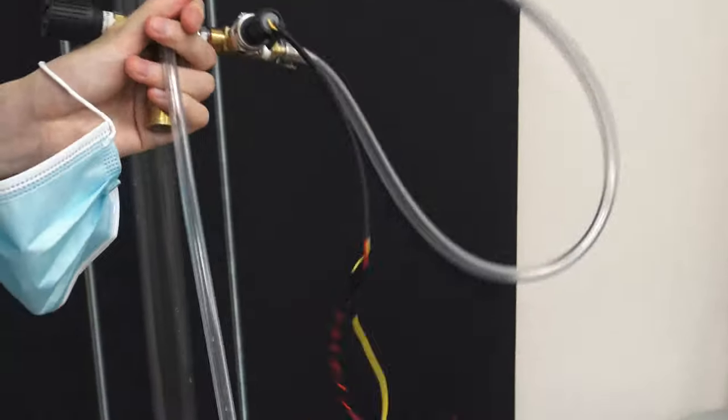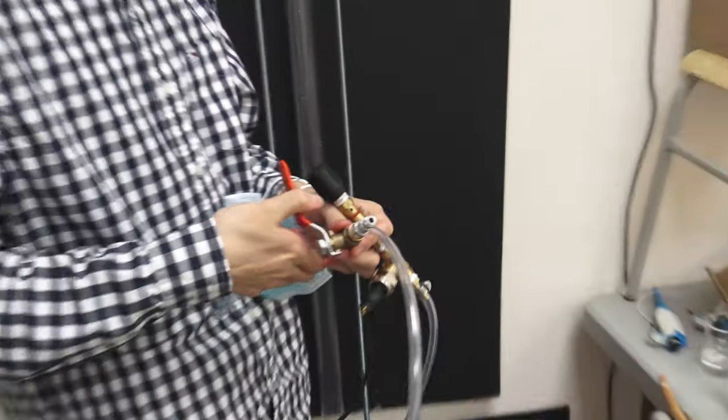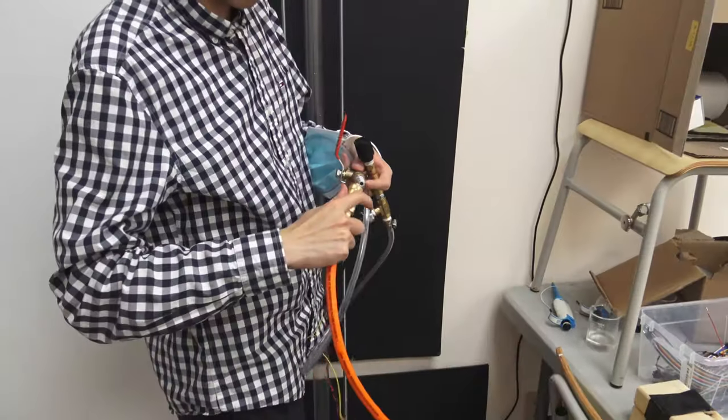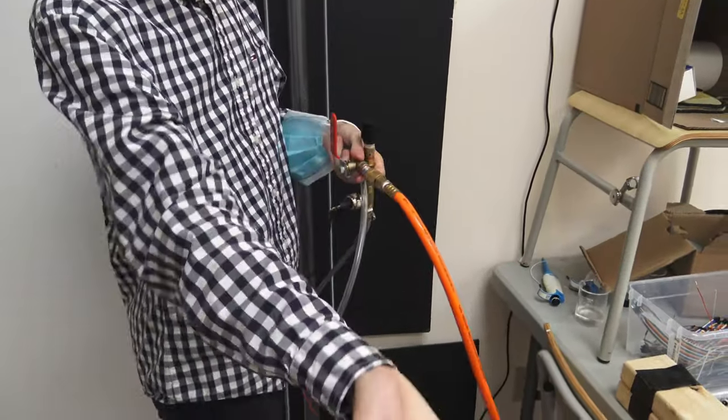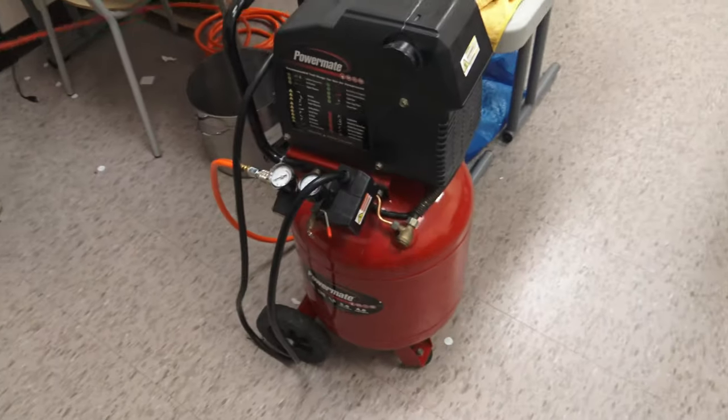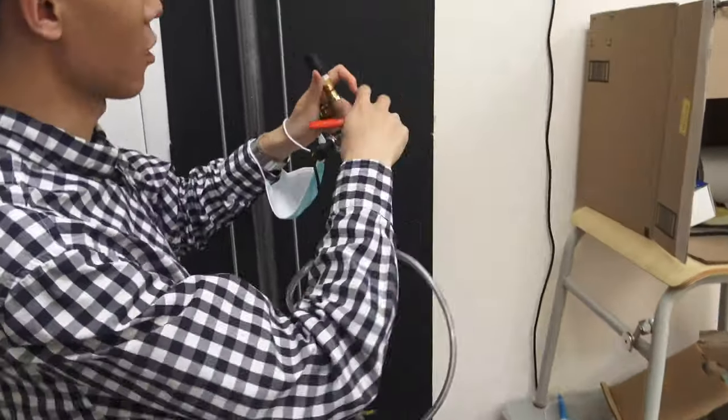And also here we have a barb connector which connects to this clear soft tubing to this valve. On the other side of the valve there's also a quick connect and this fits onto our air compressor which is there. Air compressor is kind of old, it's sort of leaky but whatever. The rest of the setup is pretty good.